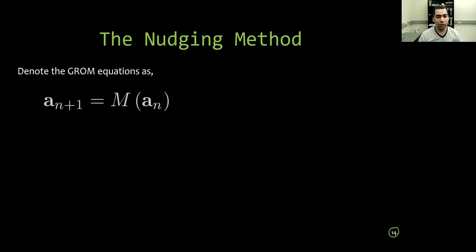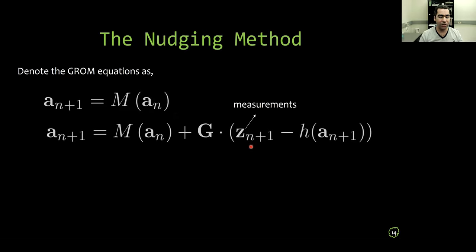In particular, the framework that we are considering here is the nudging method. So if we denote our GROM equation in a compact form as A_{n+1} equal to M of A_n, where M is a one-time step mapping from the current A_n to the future A_{n+1}, the nudging method works by simply adding a nudging or a correction term here that penalizes the discrepancy between your prediction and the actual measurements. And G is called the gain or nudging matrix. So as you see, it is a very simple approach, but usually the estimation of this gain or nudging matrix is not as simple.